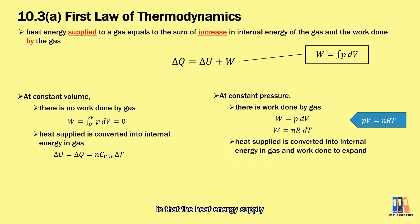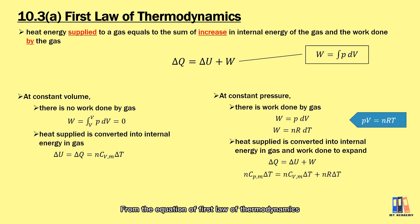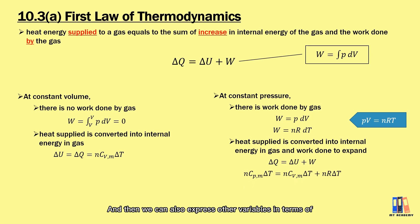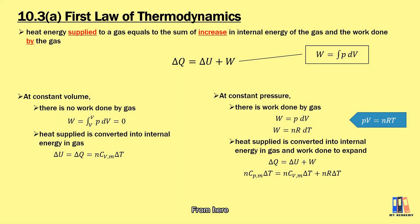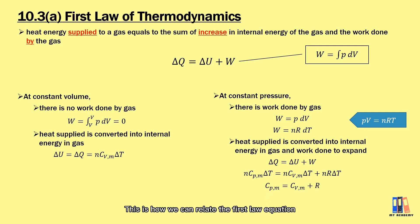What happens here is that the heat energy supplied is used to increase the internal energy of the gas and also to increase the volume of the gas. From the first law of thermodynamics equation, the heat energy is now nC_PM multiplied by the change in temperature. Expressing all variables in terms of temperature change and number of moles, we can simplify the equation and obtain C_PM = C_VM + R. This is how we relate the first law equation with the molar heat capacity.